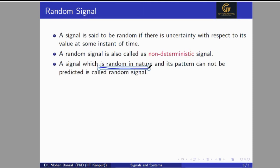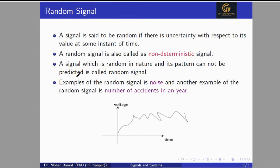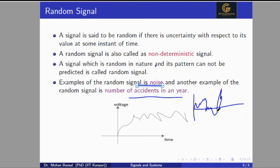A signal which is random in nature and whose pattern cannot be predicted is called a random signal. We can't predict its pattern, and we can't represent the signal as a mathematical function. We can't write a mathematical representation of a random signal. An example of a random signal is noise. We get a signal that looks noisy — we can't predict its value at any time instant. Fan noise, for example: when you speak, you get some fan noise whose value we can't predict.